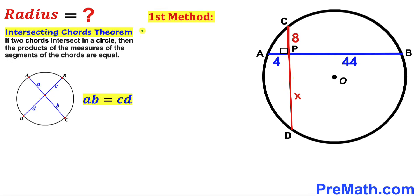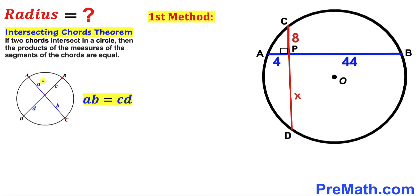Let's recall the Intersecting Chords Theorem. According to this theorem, if two chords intersect inside a circle, then the products of the measures of the chords are equal. As shown in the diagram, chords AC and BD intersect at a point, giving segments a, b, c, and d such that a times b equals c times d.